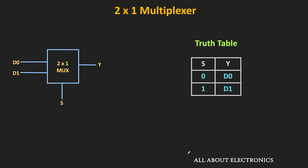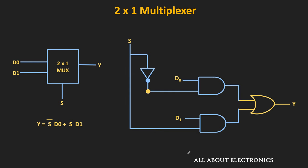This is the algebraic equation of the 2-to-1 MUX. Using this algebraic expression, we can easily design the logic circuit. The D0 and D1 inputs are applied to two AND gates, and the second input to each AND gate is the selection input. The outputs of the two AND gates are logically ORed using an OR gate. This is the logic circuit of the 2-to-1 multiplexer.